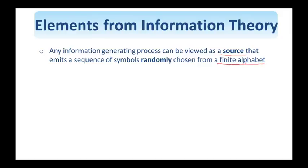So the first idea is the construct of a source which has a finite alphabet associated with it. This source emits a sequence of symbols which are chosen randomly from this finite alphabet. Such a source can model any information generating process.